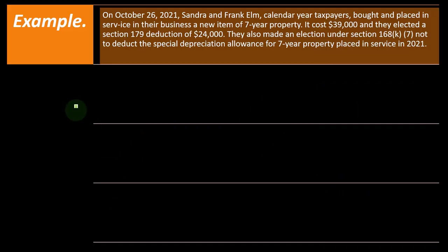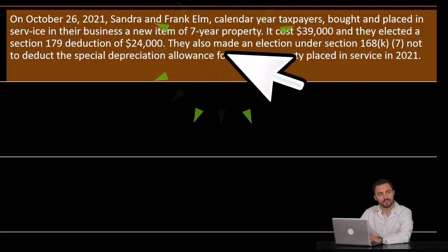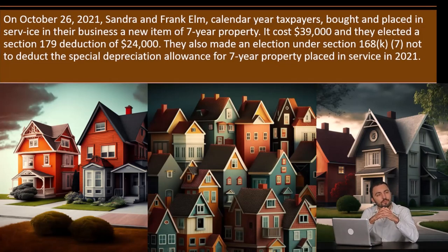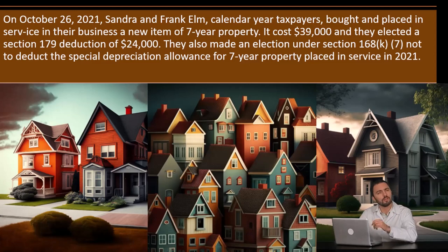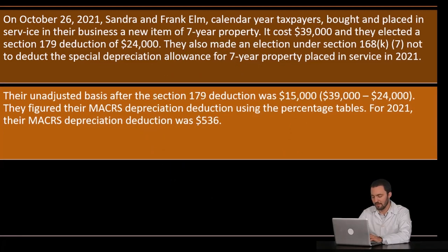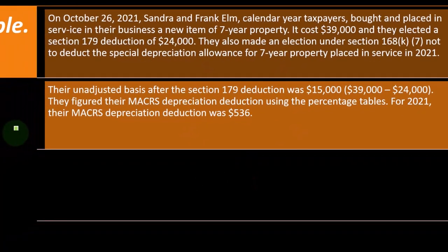Example. On October 26, 2021, Sandra and Frank Elm, calendar year taxpayers, bought and placed in service in their business a new item of seven-year property. It cost $39,000 and they elected a section 179 deduction of $24,000. They also made an election under section 168 not to deduct the special depreciation allowance for seven-year property placed in service in 2021. Their adjusted basis after the section 179 deduction was $15,000, which is the $39,000 minus the $24,000 of the 179. So they figured their MACRS depreciation deduction using the percentage tables. For 2021, the MACRS depreciation deduction was $536.